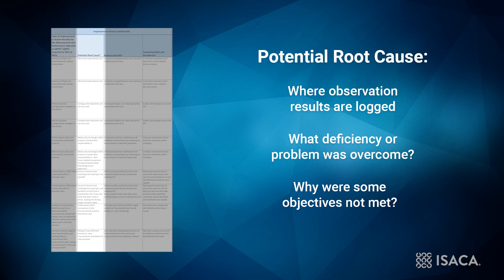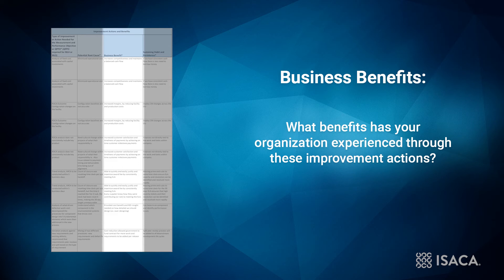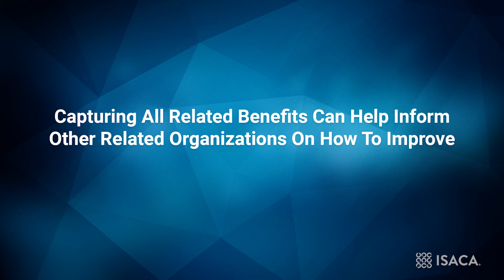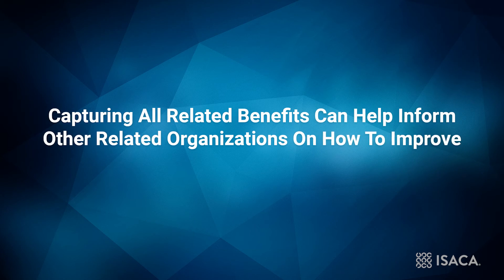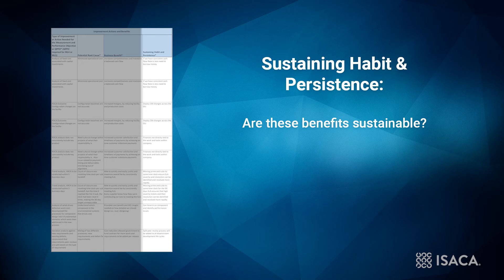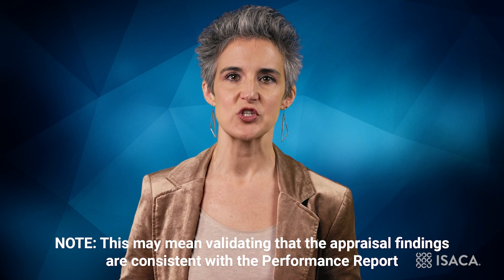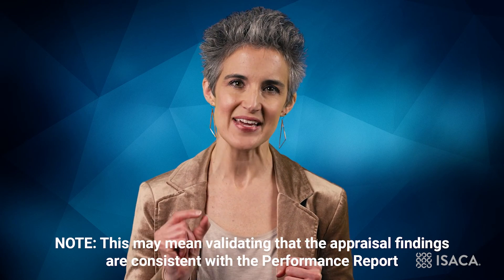If an objective was achieved, what deficiency or problem was overcome? Why were some objectives not met? Details may be provided by the organization when they initially complete the template, or they may be gleaned from evidence within the appraisal. The third column outlines the business-related benefits the organization has achieved from the improvement actions taken, including results they have reported. There are often additional benefits that were not expected. Capturing all related benefits can provide incentives to other organizations deciding how to improve their processes. The last column helps determine whether the benefits are sustainable — if the organization has taken specific actions to ensure their improvements are persistent and habitual, this is where those actions are described. If not, this is an opportunity for the appraisal team to provide useful feedback.